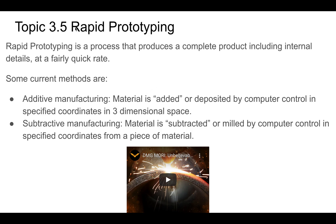Hey guys, this is topic 3.5 - rapid prototyping. Rapid prototyping is essentially, well, there are a couple of ways. There's additive and subtractive, but 3D printing comes to mind. Basically what you're doing is you're producing a complete product with its internal detail fairly quickly. So you're producing something that is complete fairly quickly, and 3D printing is probably the best example you know of right now.